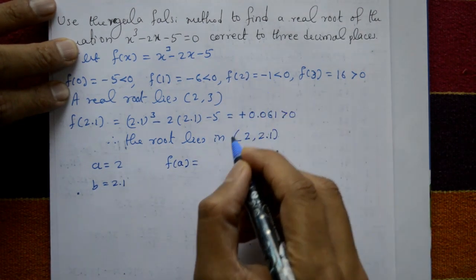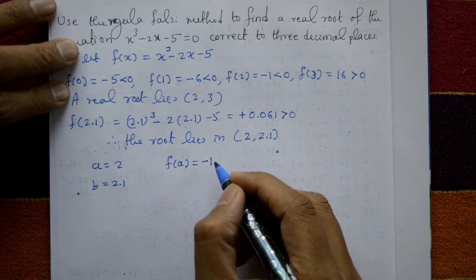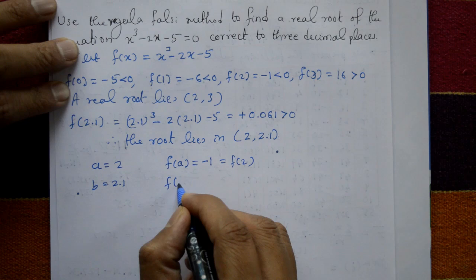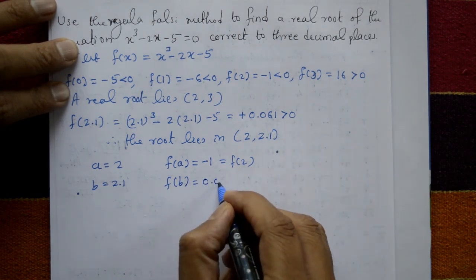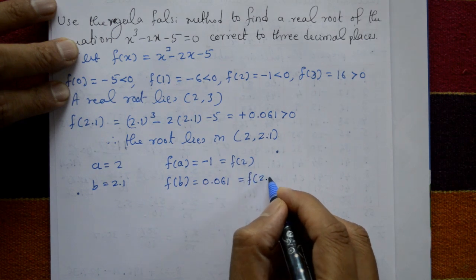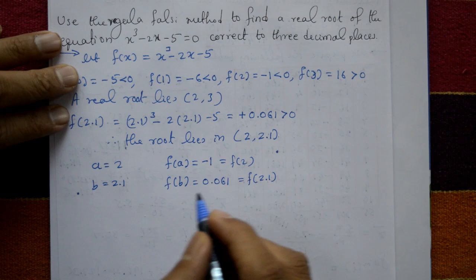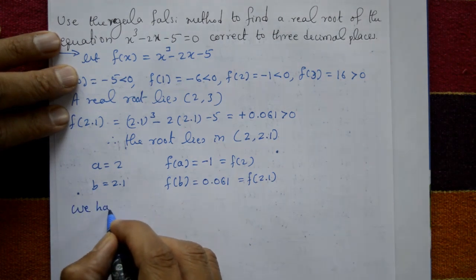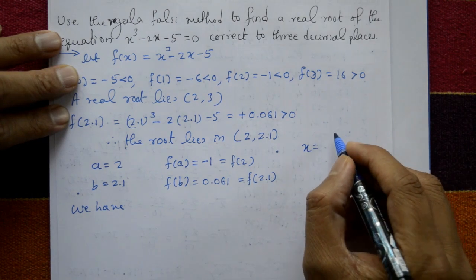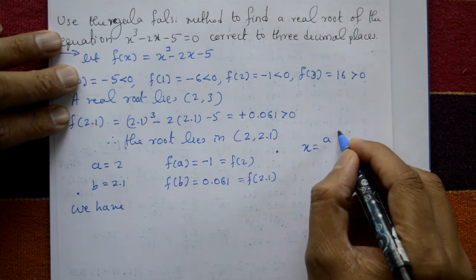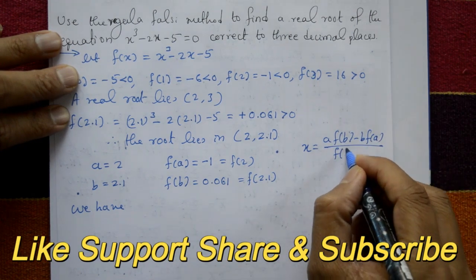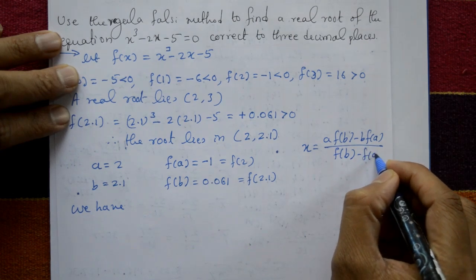f of a is negative: f of 2 is minus 1. f of b is positive: f of 2.1 is 0.061. The formula for the regular falsi method is x equal to a into f of b minus b into f of a, divided by f of b minus f of a.